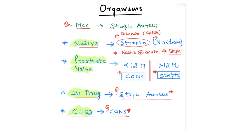Coming to the organisms involved in infective endocarditis — the most common cause overall is Staph aureus. For native valve endocarditis, there are two scenarios: acute type and subacute type. In acute type, the answer is Staph aureus. In subacute type, the answer is Streptococcus viridans.